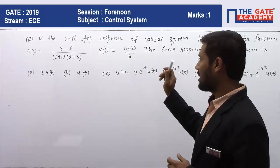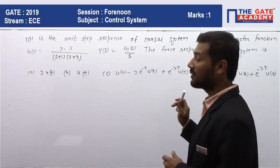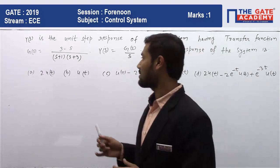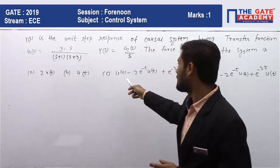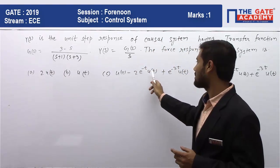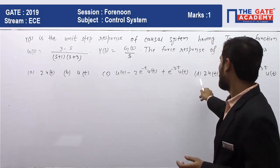There are four options already given in the question. First option is 2u(t), second is u(t), and third is u(t) - 2e^(-t)u(t) + e^(-3t)u(t).